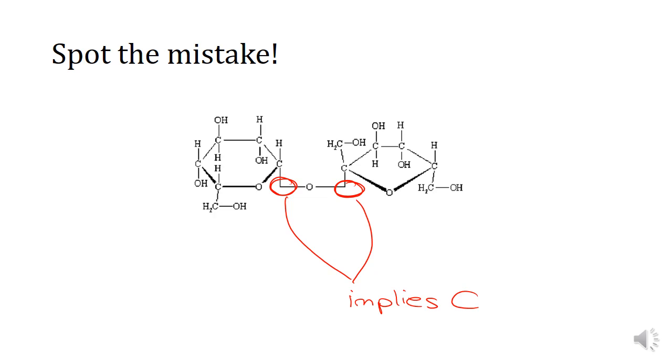What this structure is effectively doing to this disaccharide, and it's exactly the same disaccharide we saw earlier, is implying that there are these two extra carbons next to that glycosidic linkage. Make sure that when you are drawing these, you are drawing nice straight lines between these carbons and the oxygens. There isn't this right angle here.